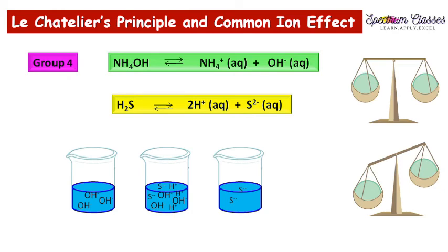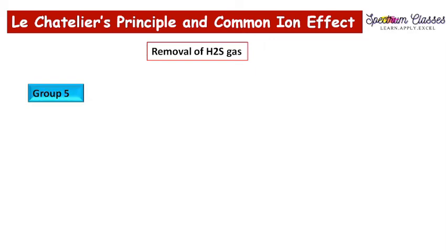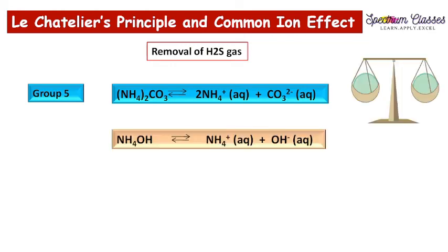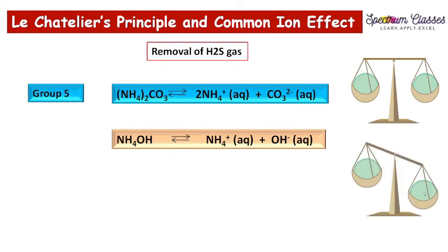Group 4 metal ions are thus precipitated in the presence of a base and high sulfide ion concentration. Before moving to Group 5, H2S must again be removed. In Group 5, ammonium carbonate is used, which dissociates in equilibrium as NH4⁺ plus CO3²⁻. Ammonium carbonate is added in the presence of NH4OH. Due to this common ion, the equilibrium shifts backward, giving less concentration of CO3²⁻, which is still sufficient to precipitate Group 5 metal carbonates.